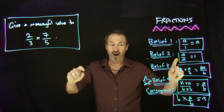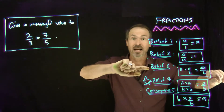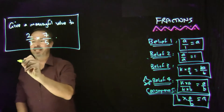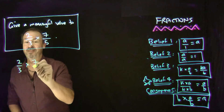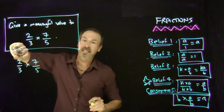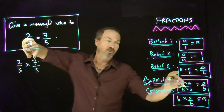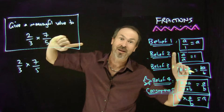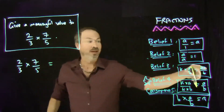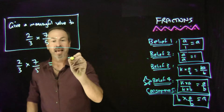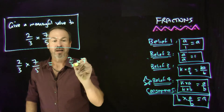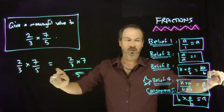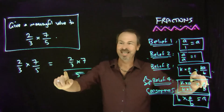When I look at two-thirds times seven-fifths, I see something times a fraction. The rule says something times a fraction is just adjust the numerator that way. I'm going to literally copy belief number three: that's something times the numerator all over that same denominator, which is five. Let me check — I think I copied that correctly.